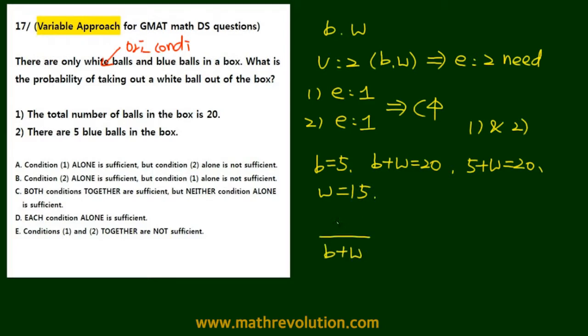What they were asking is probability which is w over b plus w. We can solve for that, 15 over 20 which is the same as 3 over 4. It's sufficient. That's why C is going to be the answer. Remember the variable approach method.